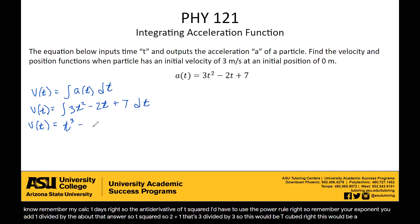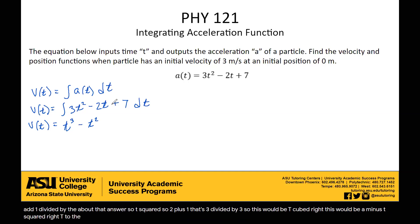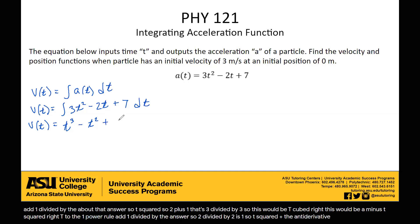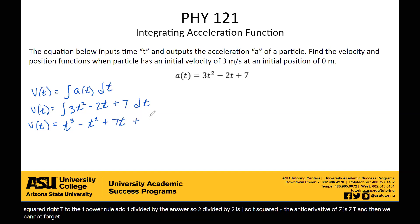This would be minus t squared. It's t to the 1, power rule, add 1, divide by the answer — 2 divided by 2 is 1 — so t squared. Plus the antiderivative of 7 is 7t. And then we cannot forget our integration constant, plus C.